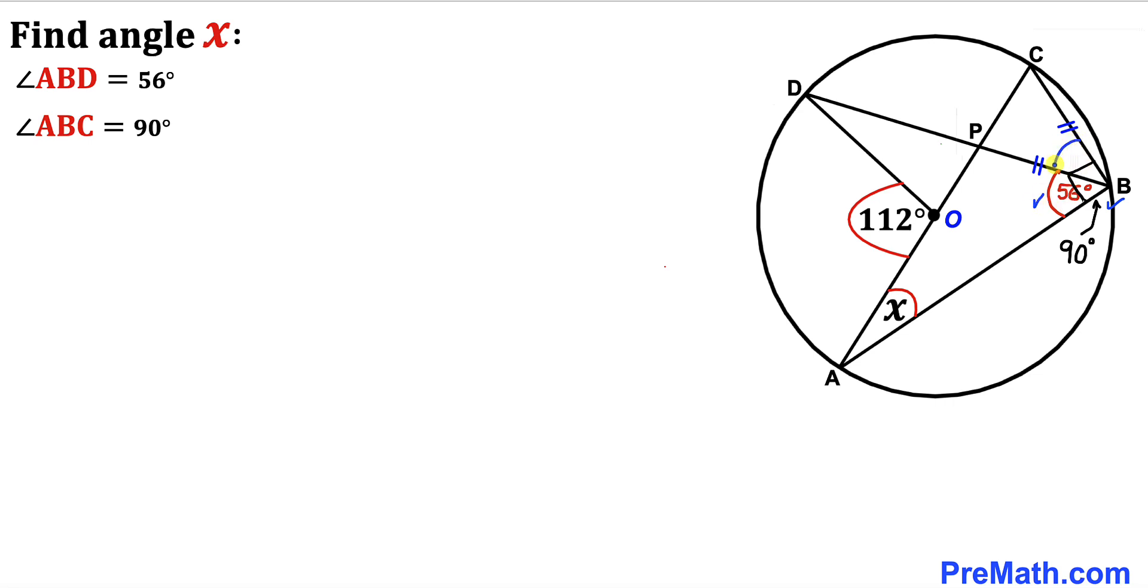Therefore, this angle is going to be 90 minus 56, which gives us 34 degrees. So angle PBC turns out to be 34 degrees.